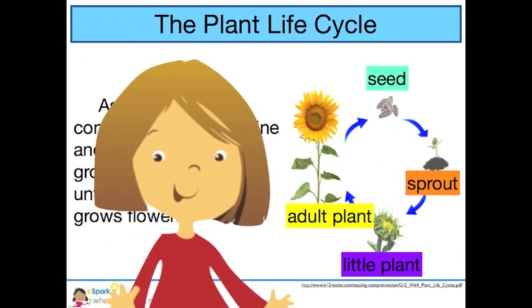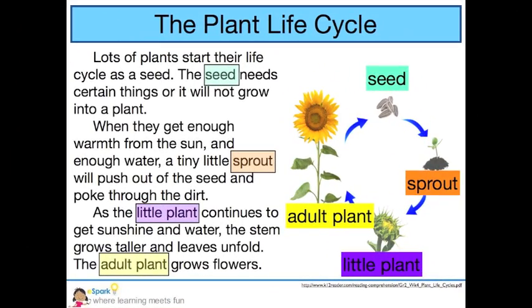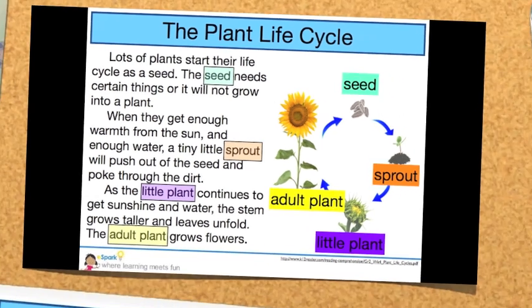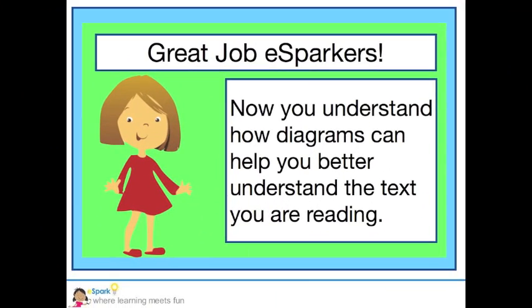Look at my diagram! I can see the whole life cycle from the seed to the sprout to the little plants to the adult plant. Now when I look at the text and the diagram together, the passage makes much more sense. I can see how diagrams can help readers understand when they're reading non-fiction text. Great job, eSparkers! Now you understand how diagrams can help you better understand the text you are reading.